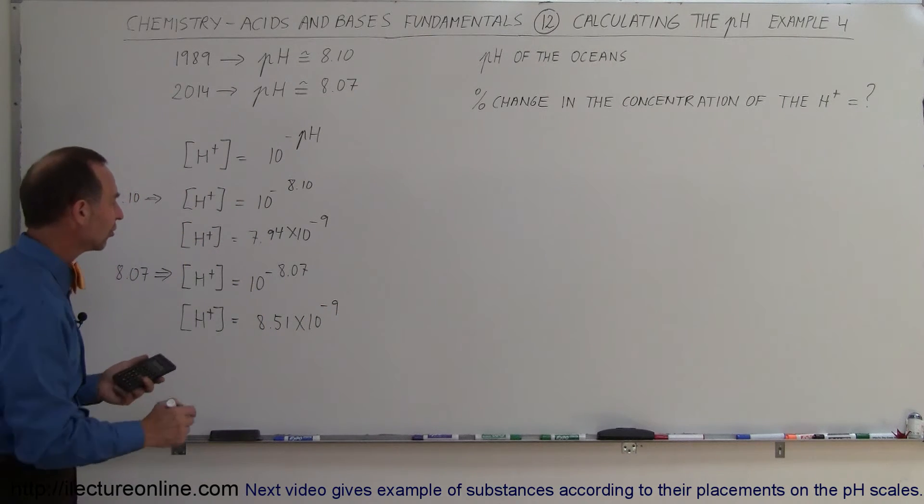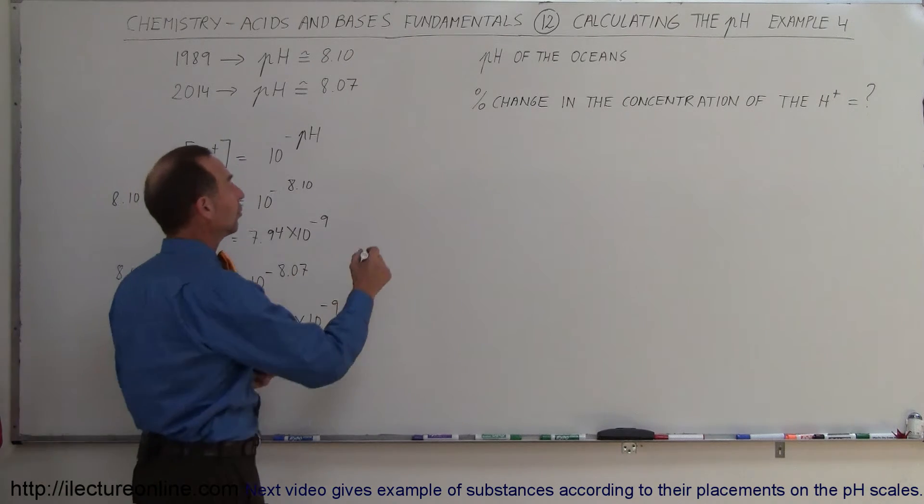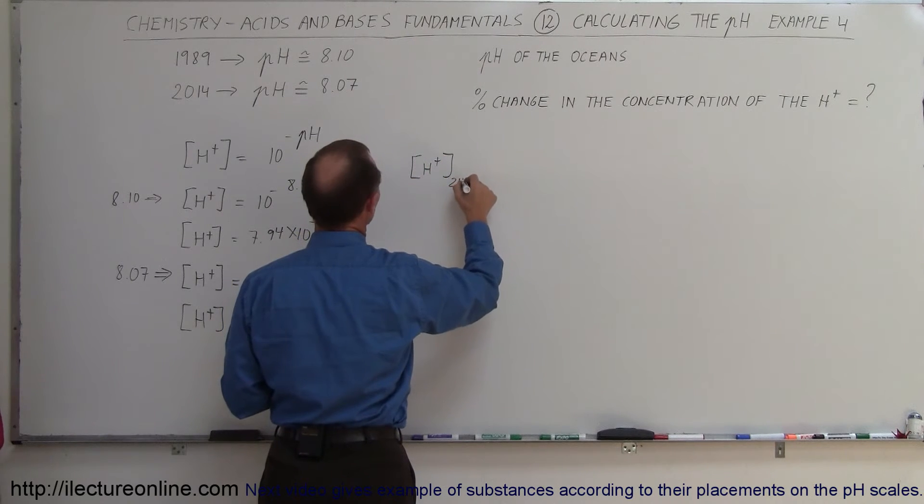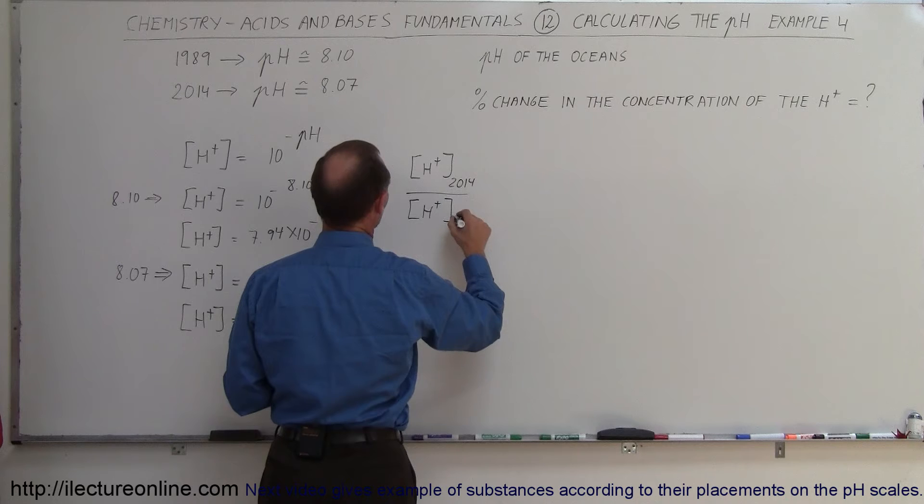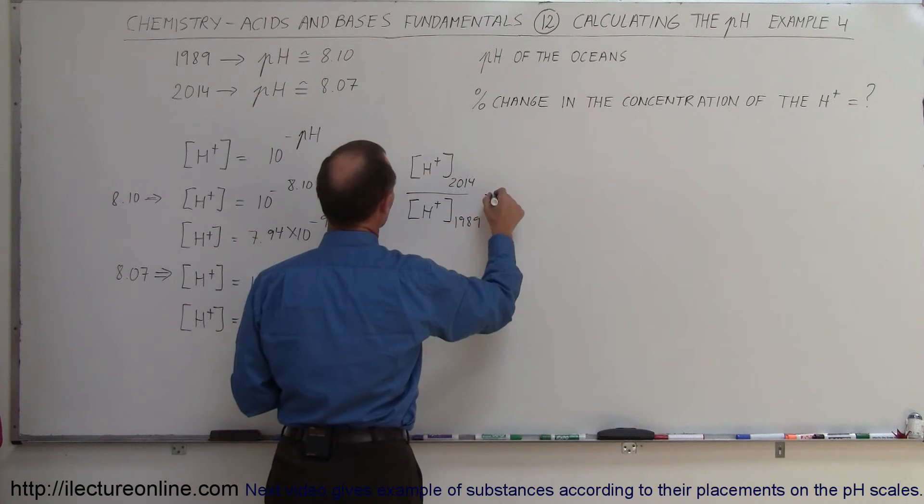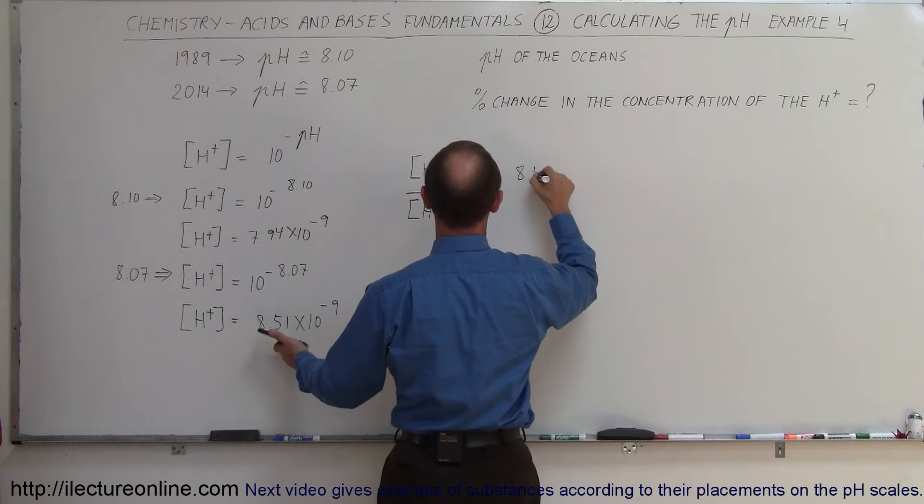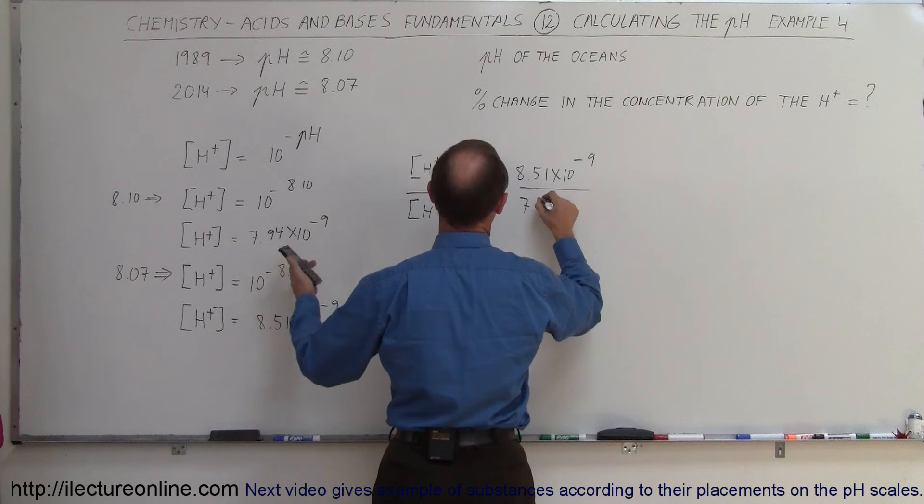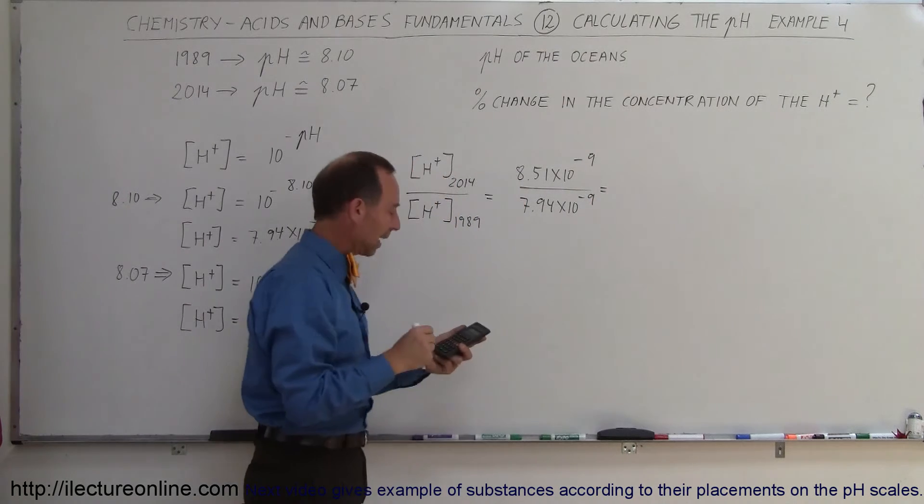So how much has it changed? You can see that the concentration now is higher than it used to be. So let's do a ratio. Let's do the ratio of the concentration of the hydrogen ion in 2014 divided by the concentration of the hydrogen ion in 1989. So that is equal to, the current one would be 8.51 times 10 to the minus 9 divided by 7.94 times 10 to the minus 9.